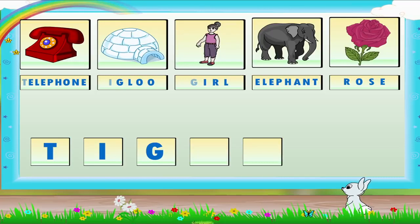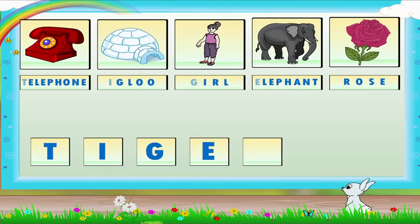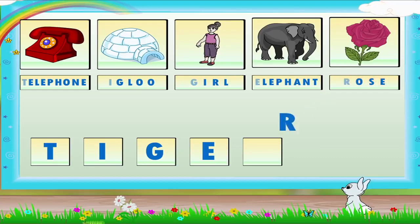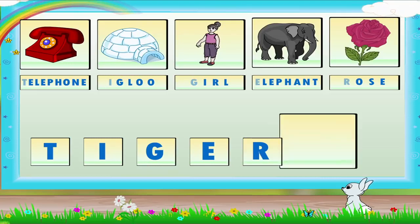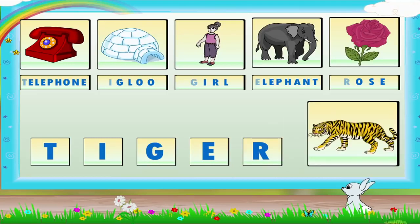We will put E from the word elephant in the fourth square. And the last square will have R from the word rose. Now, let us read out the letters: T, I, G, E, R. Tiger. Good!